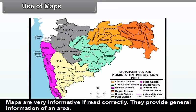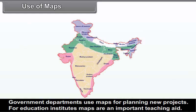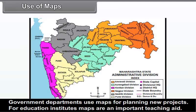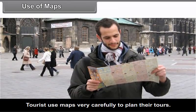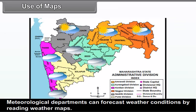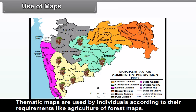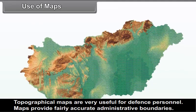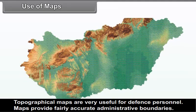Use of Maps: Maps are very informative if read correctly. They provide general information of an area. Government departments use maps for planning new projects. For educational institutes, maps are an important teaching aid. Tourists use maps carefully to plan their trips. Meteorological departments can forecast weather conditions by reading weather maps. Thematic maps are used by individuals according to their requirements, like agriculture or forest maps. Topographical maps are very useful for defense personnel. Maps also provide fairly accurate administrative boundaries.